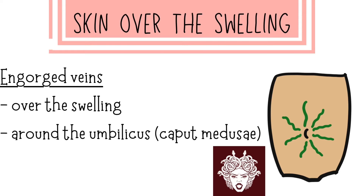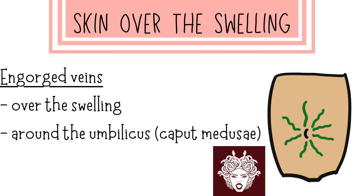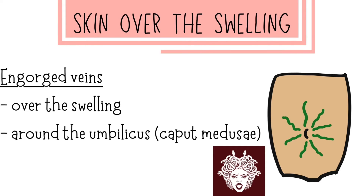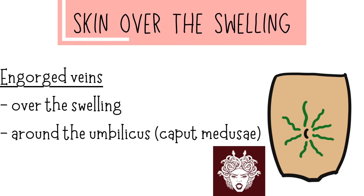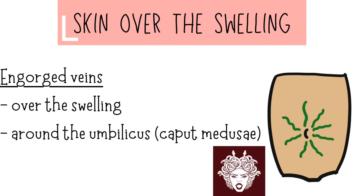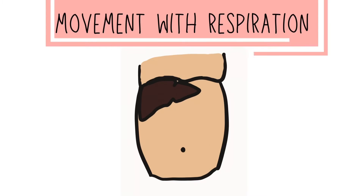We also have to look for engorged veins over the swelling, which indicates the swelling is hypervascular, like a sarcoma. You can also look for dilated tortuous veins radiating from the umbilicus, known as caput medusae, because it resembles the hair of the Greek creature Medusa.